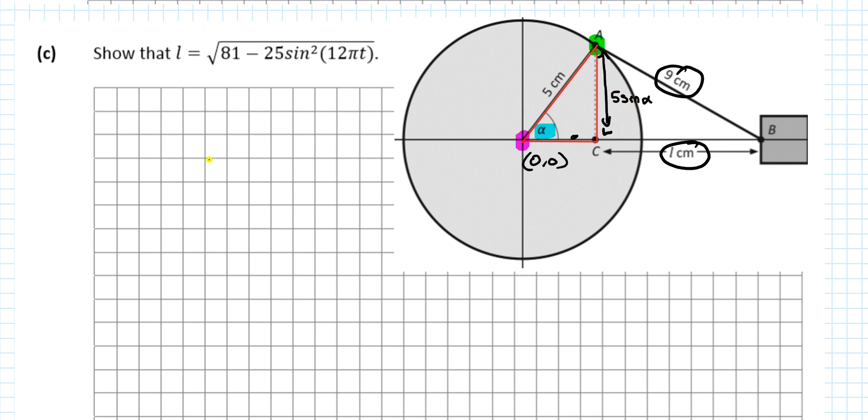Right angle triangle and you want to get L on its own - you're looking at Pythagoras. So the hypotenuse, 9 squared plus 5sinα squared - that's the whole thing squared. That's 81 plus L squared. And L squared plus 5 by 5 is 25, sine by sine is sine squared α. Get L on its own: L squared equals 81 minus 25 sine squared α. L equals square root of 81 minus 25 sine squared α.